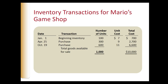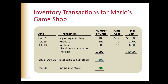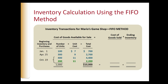To see how the three cost flow assumptions work, consider Mario's Game Shop, which sells video game controllers. Mario has 100 units at the beginning of the year, makes a purchase on April 25th and another on October 19th, with different unit costs at each purchase. There are 1,000 game controllers available for sale. During the year, Mario sells 800 video game controllers for $500 each, meaning 200 controllers remain in ending inventory at the end of the year.